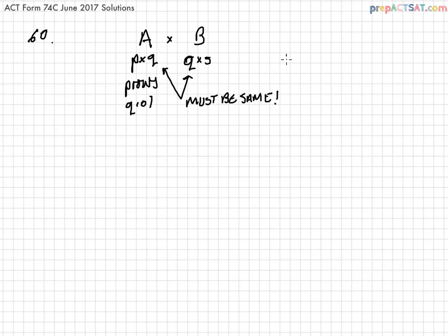And it has to work in this order, so I can get the matrix product A by B because the inner dimensions are the same. But if I try B by A, I'm going to be multiplying a matrix with Q rows and S columns by a matrix with P rows and Q columns. That will not work.